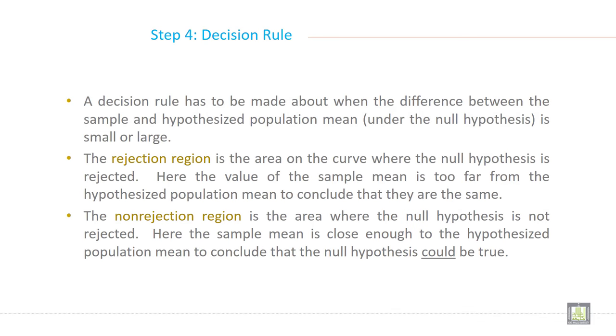So this is step 4 in hypothesis testing. A decision rule has to be made about when the difference between the sample and the hypothesized population mean under the null hypothesis is small or large.